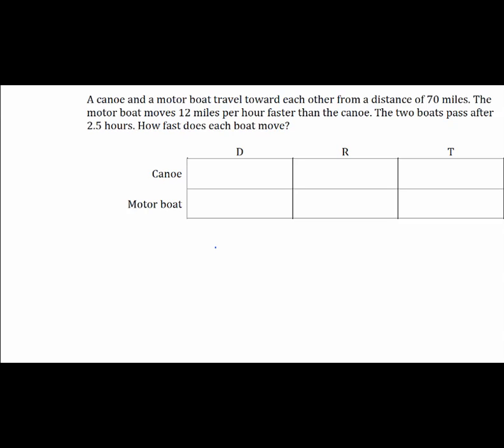This is a uniform motion problem for which it's helpful to create a distance, rate, and time table for each moving body: the canoe and the motorboat. The first thing we're going to do is fill in this table with the information that we know exactly.